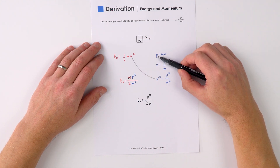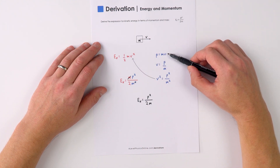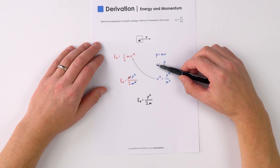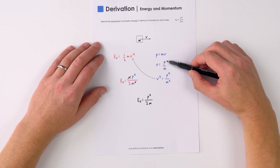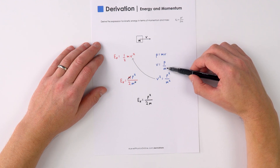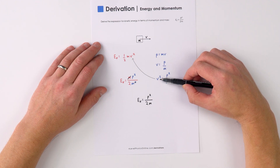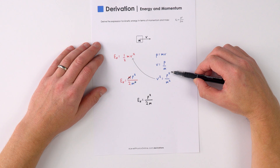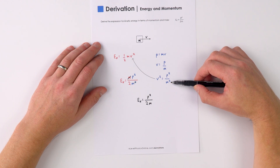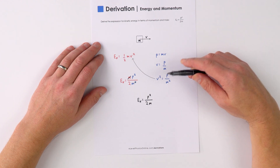Now momentum, p, is equal to its mass times velocity. So v is equal to p over m, and therefore v squared is equal to p squared over m squared.